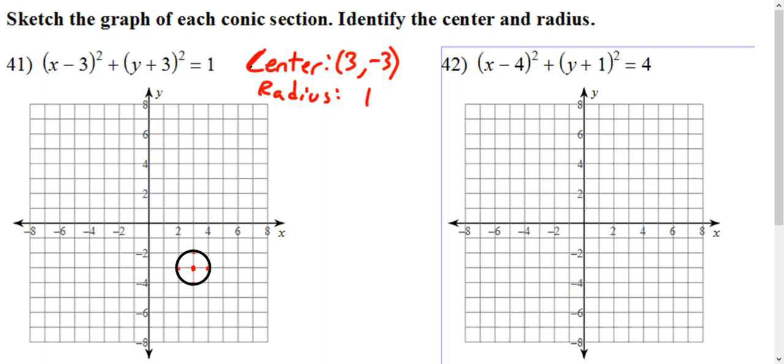For the next example, center is positive 4 and negative 1. And the radius. Remember, this is r squared, so the radius is the square root of 4, which is just 2.